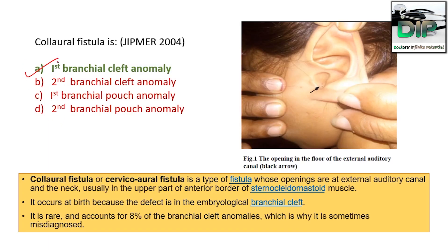In this picture you can see the opening in the floor of the external auditory canal shown by the black arrow. The colo-aural fistula, or cervical aural fistula, is a type of fistula whose openings are at the external auditory canal and the neck — usually in the upper part of the anterior border of the sternocleidomastoid muscle. It occurs at birth because the defect is in the embryological branchial cleft. It is rare, accounting for only 8% of branchial cleft anomalies, which is why it is sometimes misdiagnosed.